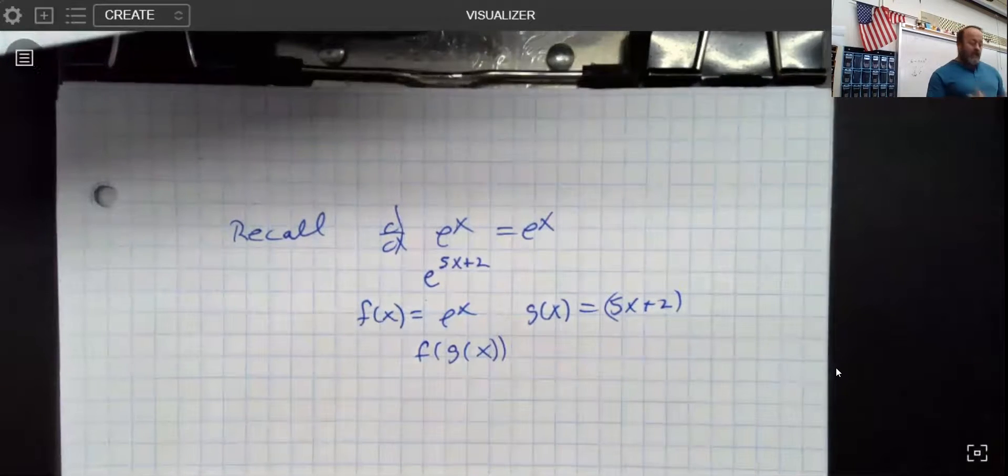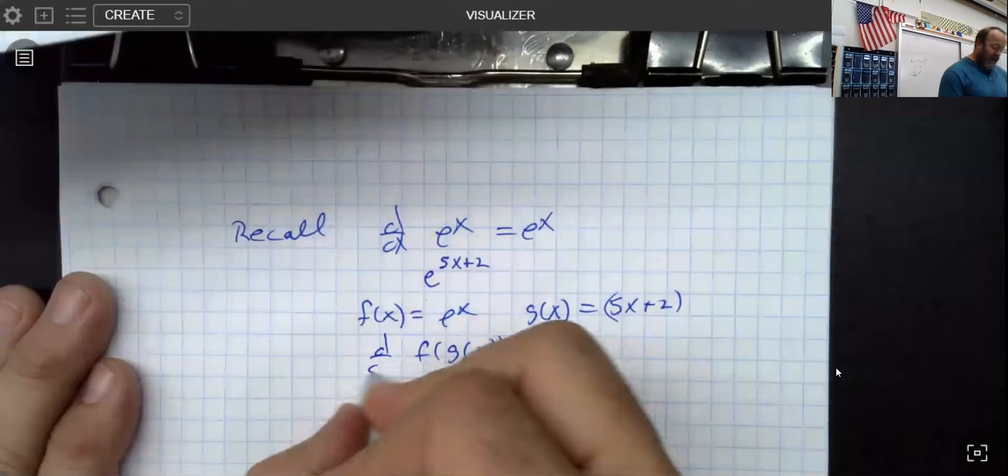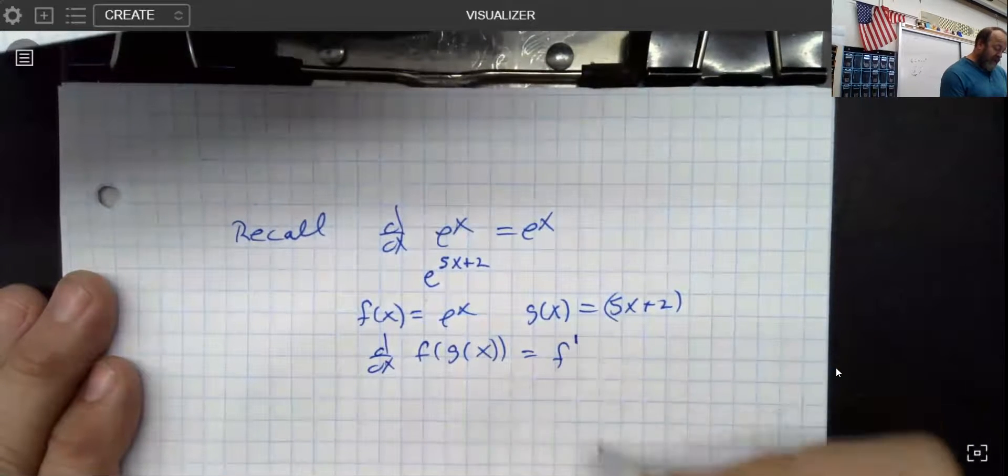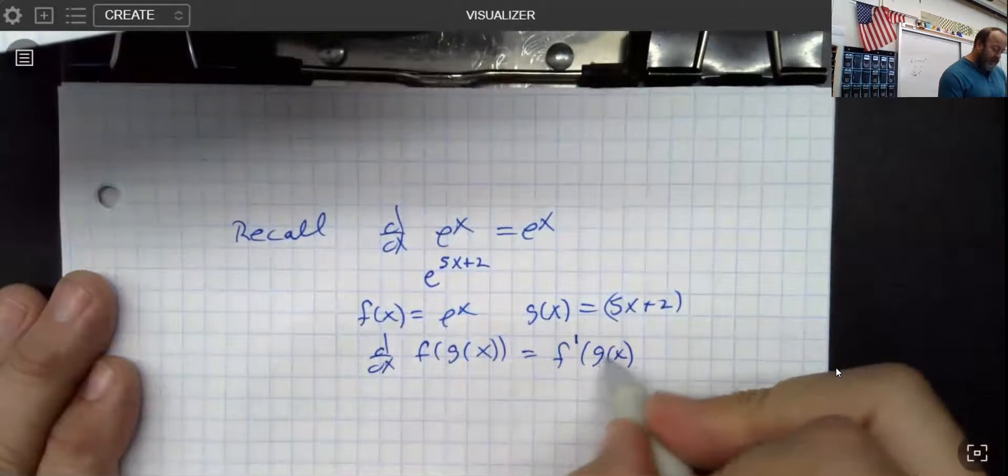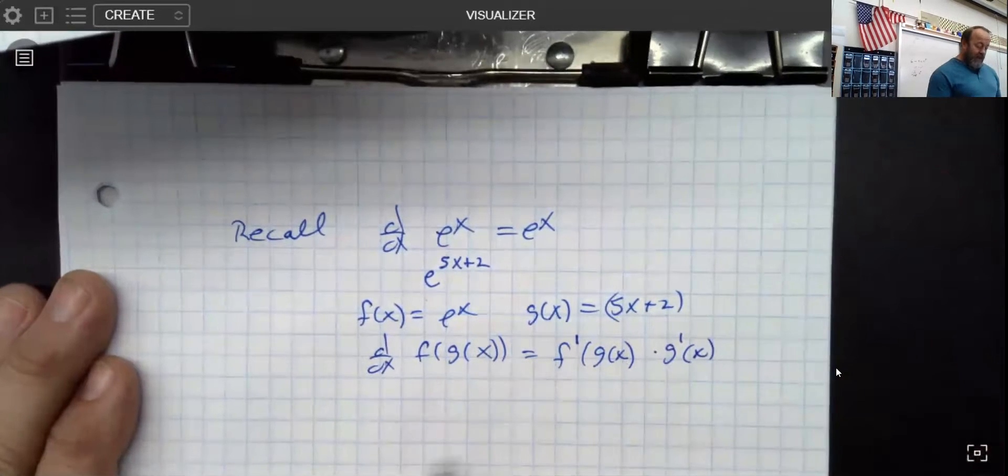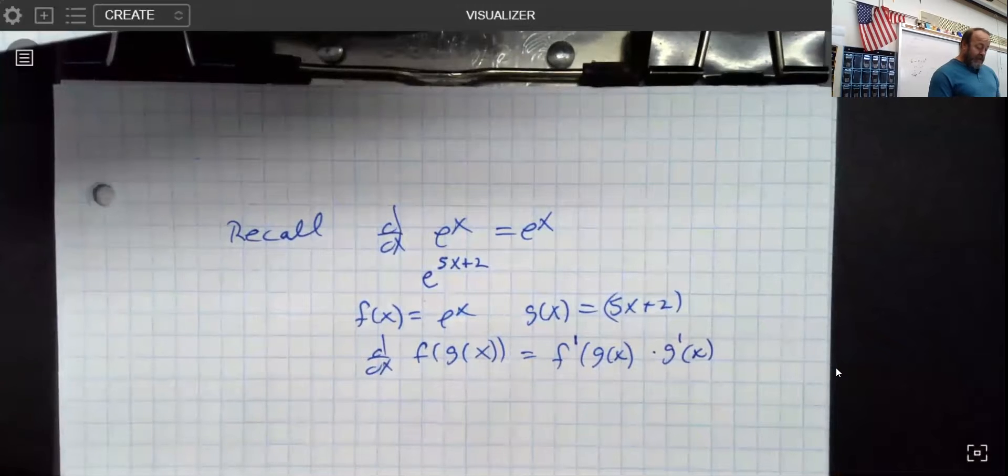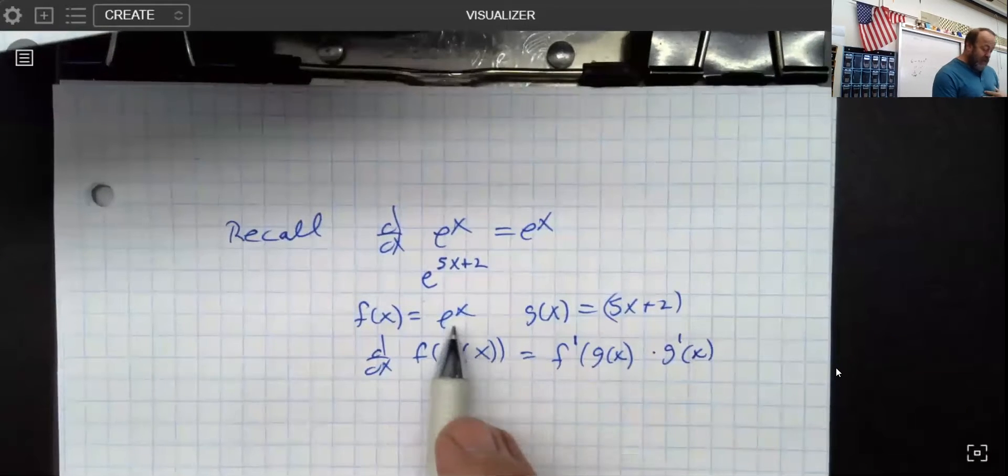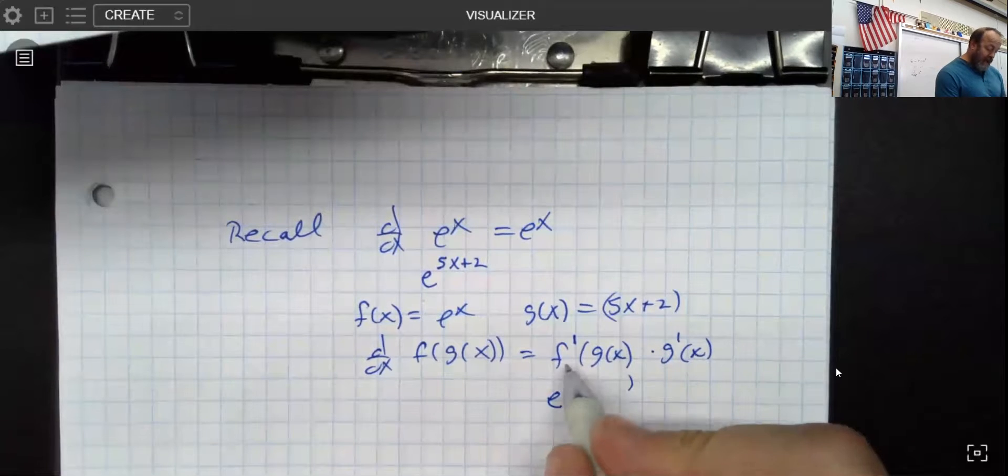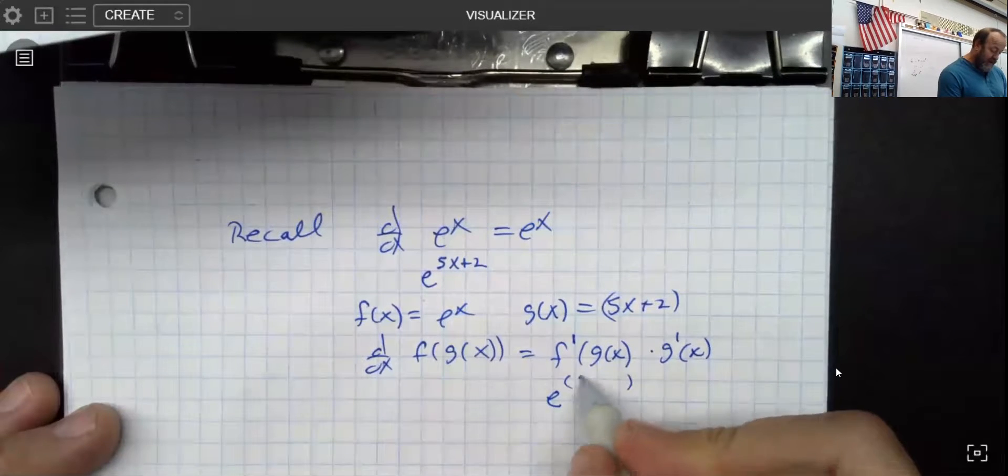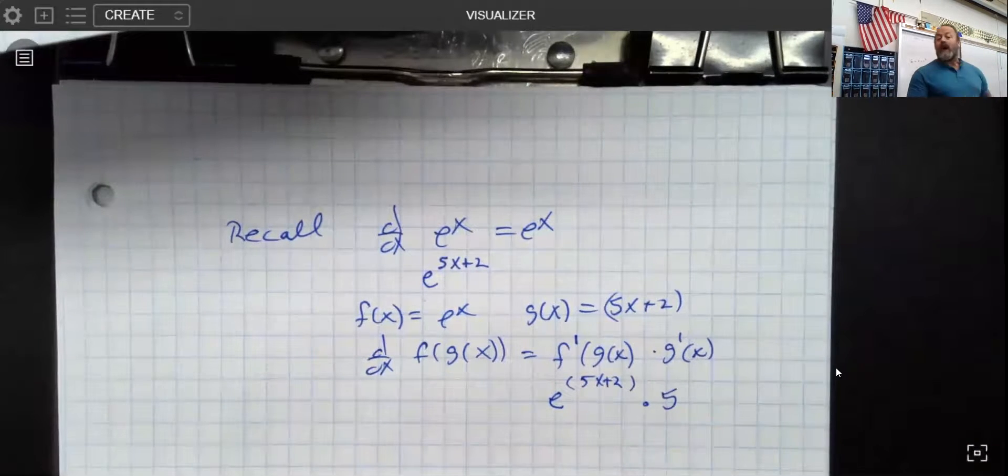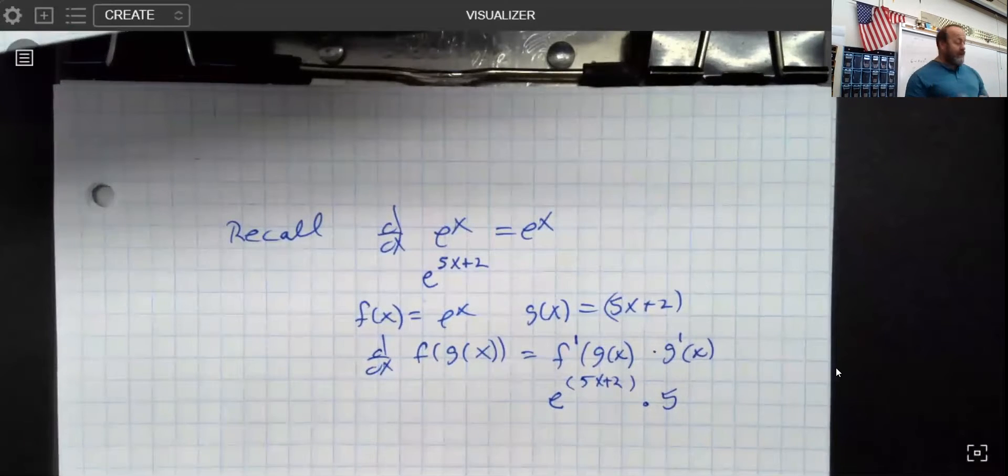So secondarily, you want to remember that if you take the derivative of a composite function, we take the derivative of the outer function leaving the interior portion alone times the derivative of the inside piece. So if that is the case, the derivative of the outside function, say e to the x, would be e to the x, but of course it's not e to the x, it's e to the g which is 5x plus 2, times the derivative of that interior function which of course is 5. So that's just to remember that little piece.